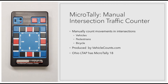The Manual Intersection Traffic Counter that Ohio LTAP has available is the Micro Tally 18. The Micro Tally is designed to allow manual counting and timing of events, traffic intersections, and vehicle classification, either in the field or in the comfort of your office from a video recording made at the scene. The Micro Tally is a turning movement counter primarily used to manually count vehicles, pedestrians, and bicycle movements in intersections. However, the Micro Tally is far more versatile than that — it can be used in nearly any tally or counting situation that matches the keypad layout.